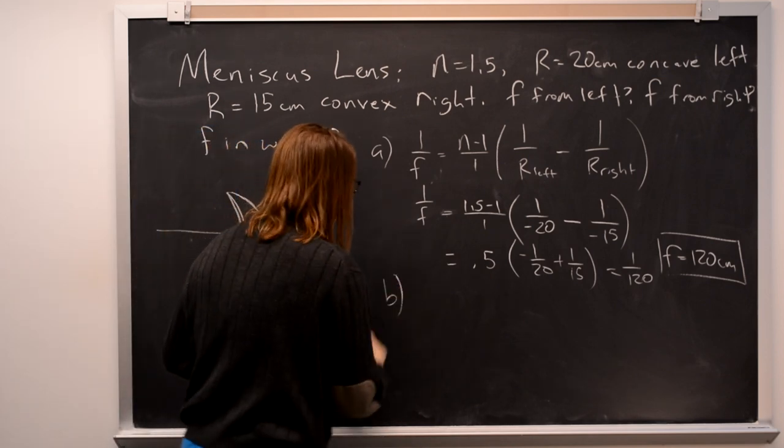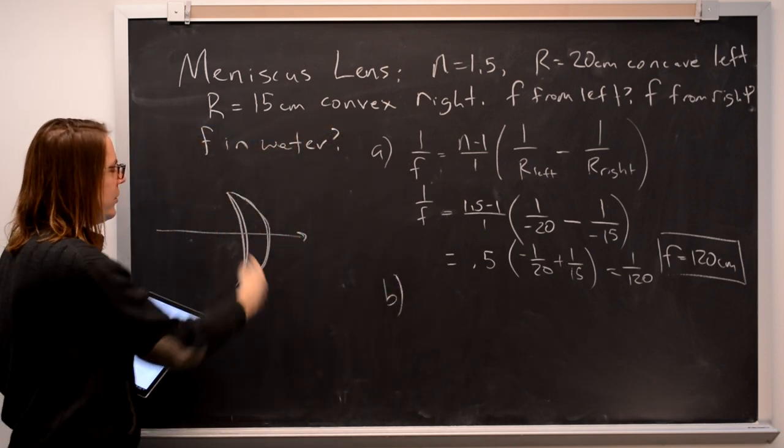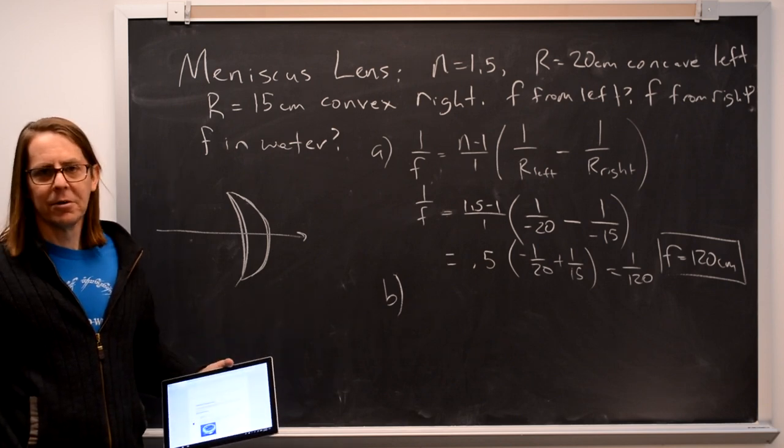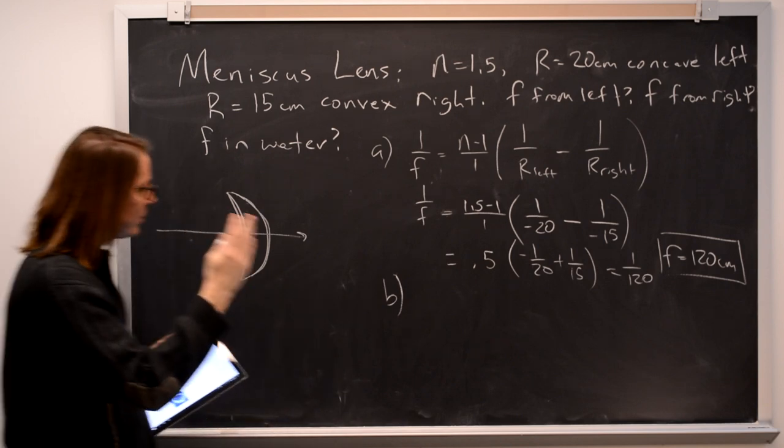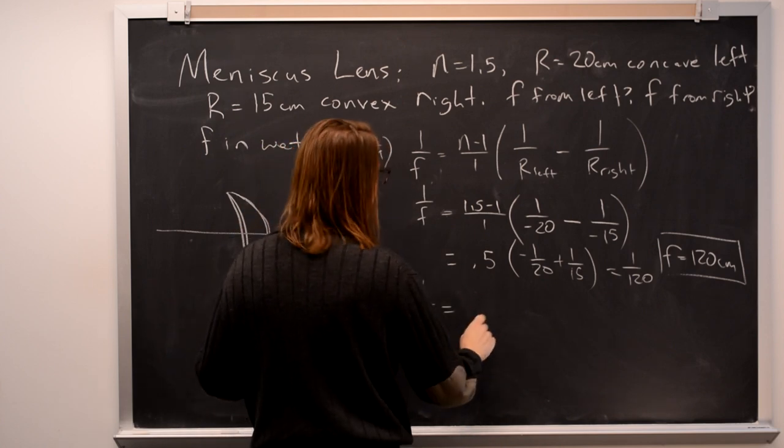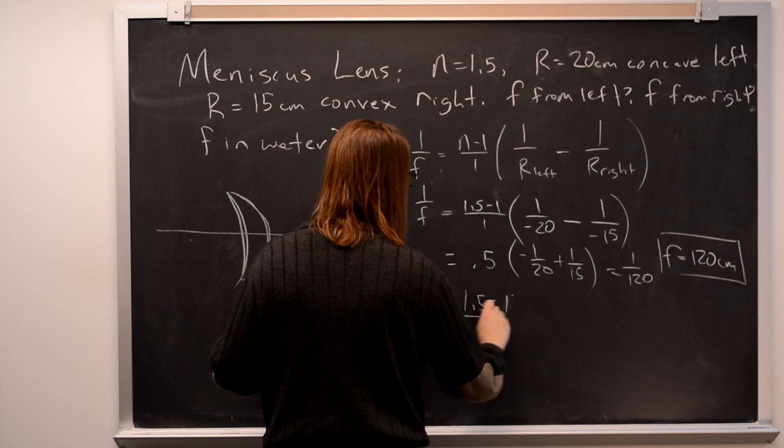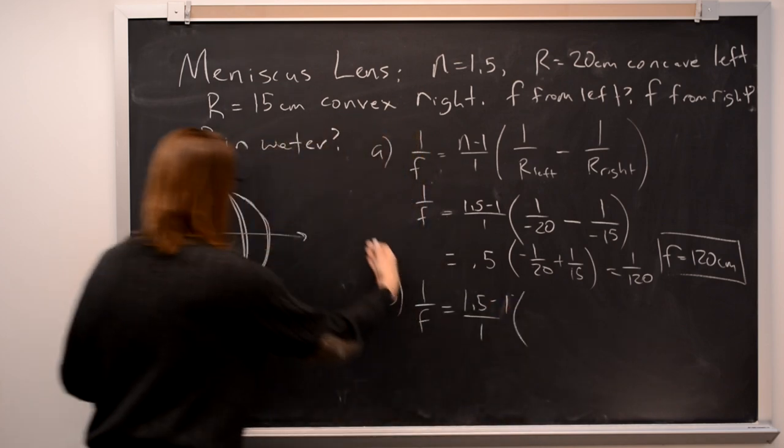Part B: What's the focal length if you go the other way? Spoiler alert: it doesn't matter. Let's go through the math just to make sure because it makes you feel better about the world. 1 over f equals 1.5 minus 1. Coming this way.